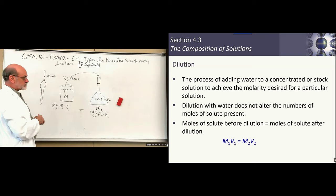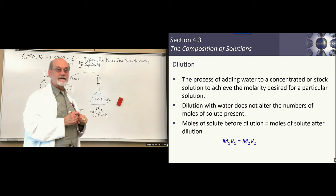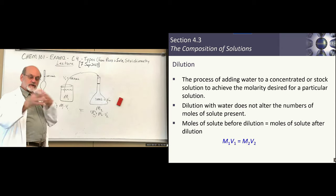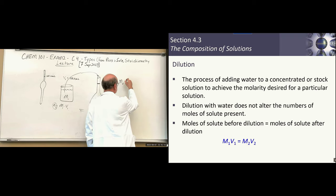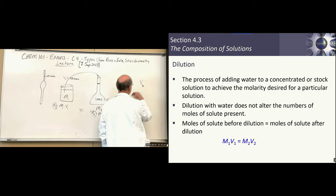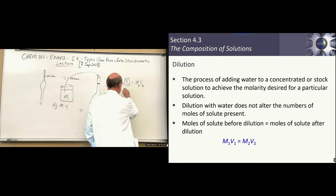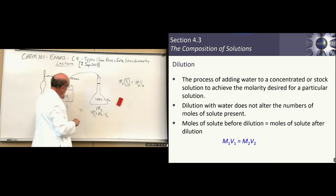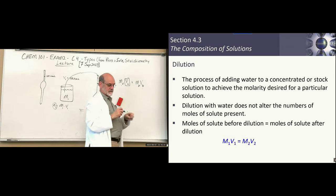To use the formula, you only need three of the four terms to solve for the fourth. For diluting solutions, we know the concentrated molarity and the final diluted volume and target molarity — we solve for how much volume to take out of the concentrated solution to give that target molarity when diluted to that final volume.